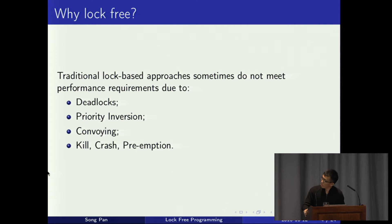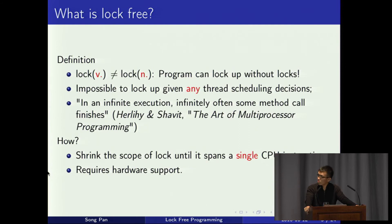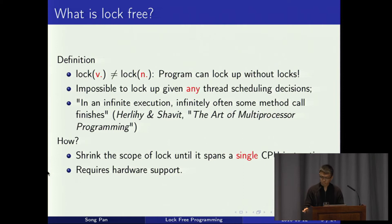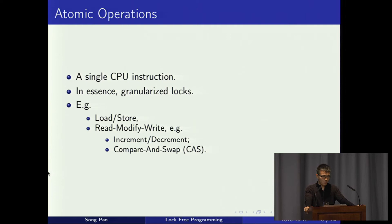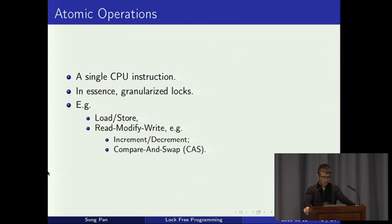How do we actually do it? We notice that many problems are due to bad things happening inside the lock. So what if we shrink the scope of a lock until it spans only one single CPU instruction? The programmer can't do anything bad inside that lock, and we avoid most of the problems. This requires hardware support — at minimum, the instruction set must provide such an instruction. That instruction is called an atomic operation. It's a single CPU instruction, so it's indivisible: no interrupts can happen within it. It acts as a granularized lock — you obtain a lock, do some work, release the lock, all in one instruction.